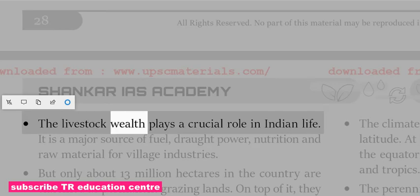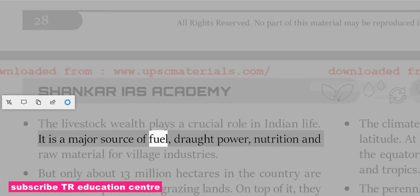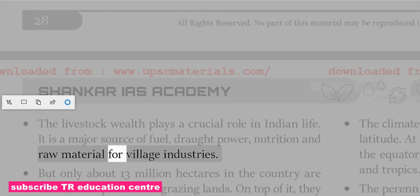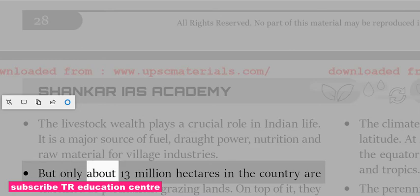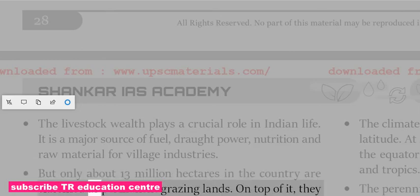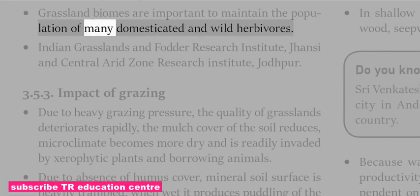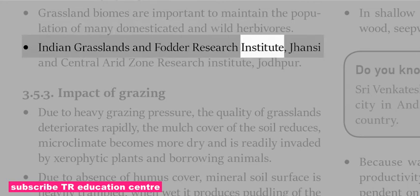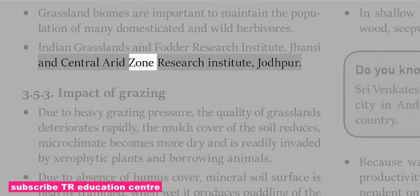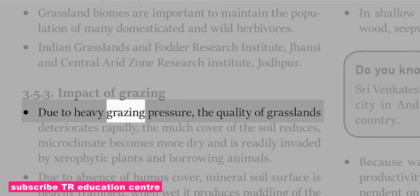Livestock plays a crucial role in Indian life as a major source of fuel, drought power, nutrition and raw material for village industries. Only about 13 million hectares in the country are classified as permanent grazing lands, and they exist in a highly degraded state. Grassland biomes are important to maintain the population of many domesticated and wild herbivores. Key research institutions include the Indian Grasslands and Fodder Research Institute, Darcy, and the Central Arid Zone Research Institute, Jodhpur.